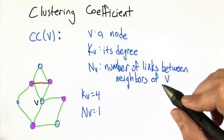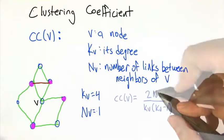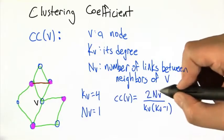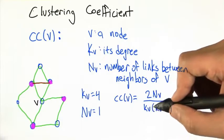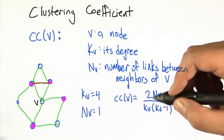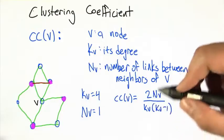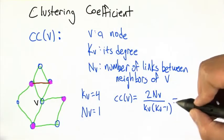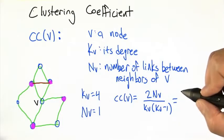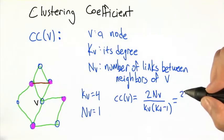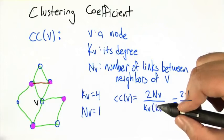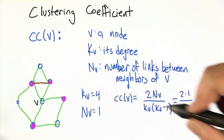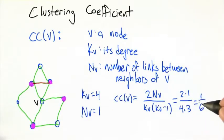Now we're going to combine these quantities together as follows. We take twice the number of neighbor links divided by the degree of v times one minus the degree of v. So in this case, 2 times n_v, which is 1, divided by k times k minus 1, so that's 4 times 3. The result we get in this case for this particular v is one sixth.